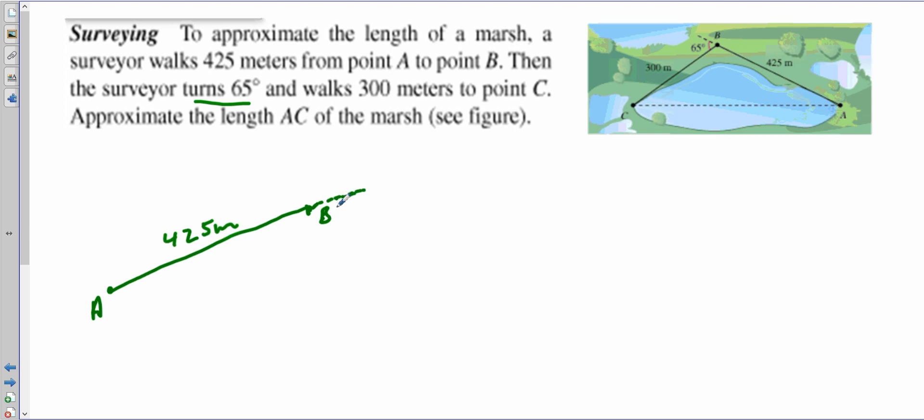So this is going to be 65 degrees. Just so you know, it doesn't matter which way you go if we weren't given a diagram. Then he walks another 300 meters, a little bit shorter, to point C. Approximate the length from A to C of this marsh.